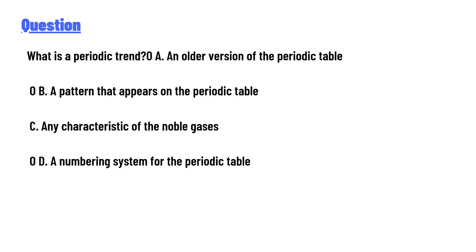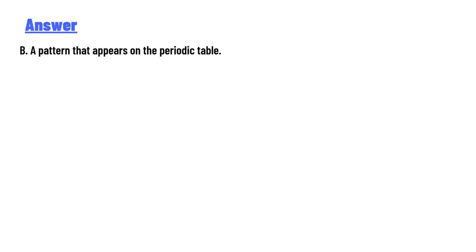B: A pattern that appears on the periodic table. C: Any characteristic of the noble gases. D: A numbering system for the periodic table. The answer to the question is: a pattern.